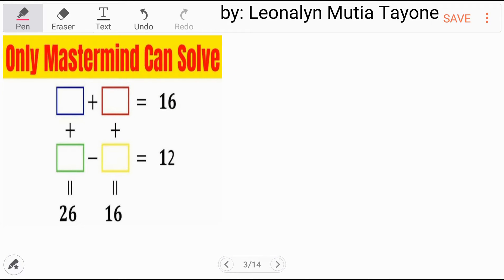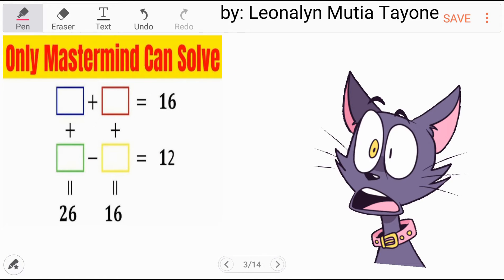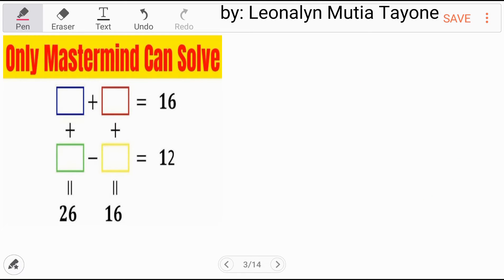Let's do this 'only mastermind can solve,' really. Now if we are going to solve this by trial and error, it will take a long time for us to solve this. The best way to solve this is we will use the algebraic expression or whatever you want to call this, ABC equals something like that, we will use variables.